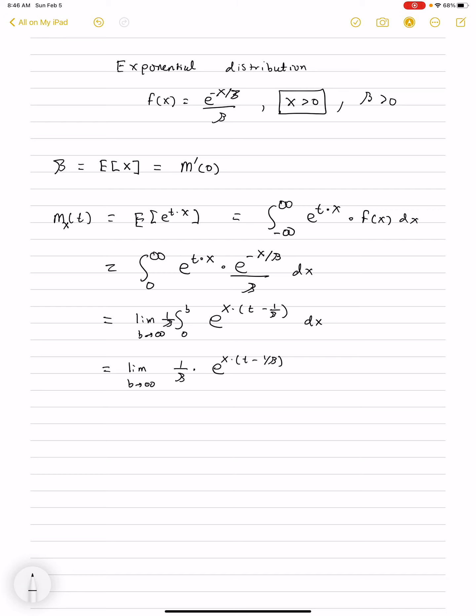And then, we'll divide by the coefficient of x. And then, we'll evaluate at 0 and b.